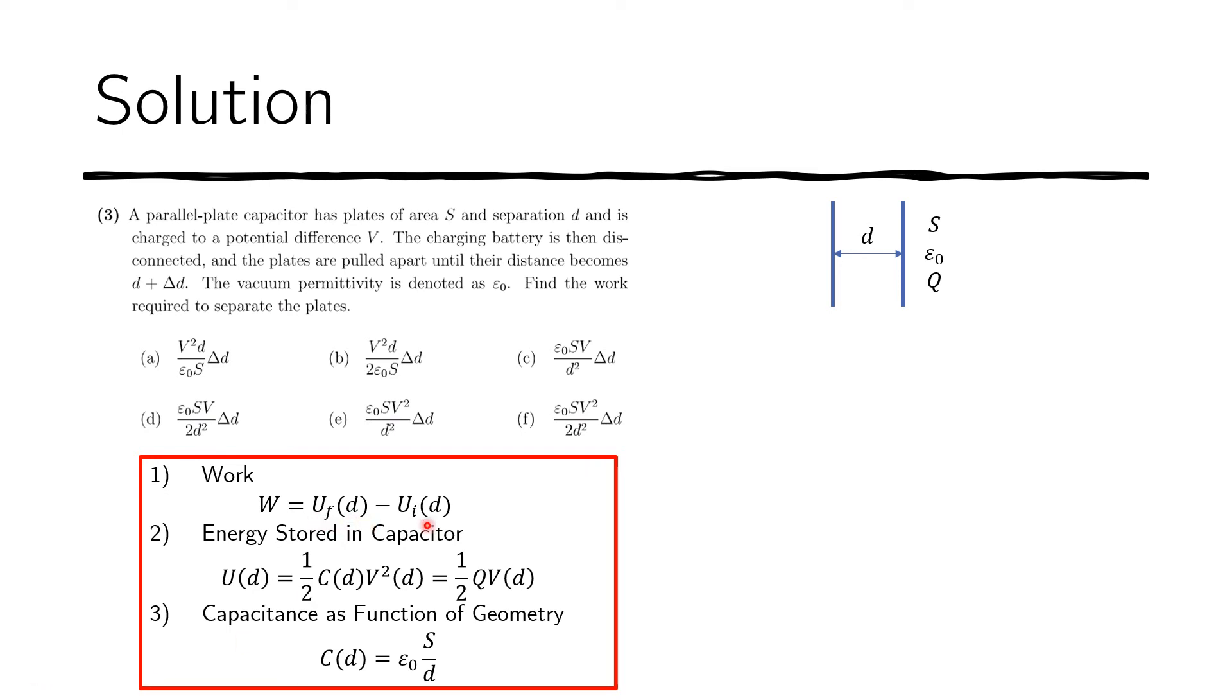Now we start working on the energy terms here, so we can find the work. Let's start with the initial state. Here we have a separation D, and then an area S, permittivity epsilon naught, and the total charge Q. And the energy stored in the capacitor would be the following. So that would be one half Q, which is the charge. And now we express this voltage as the product of the electric field across the capacitor times the separation.